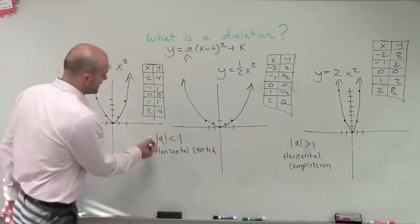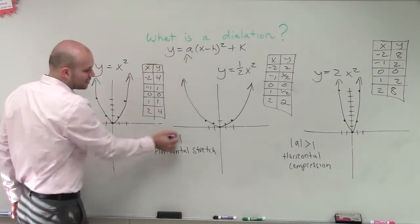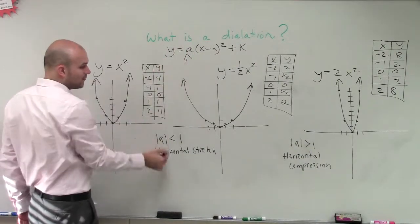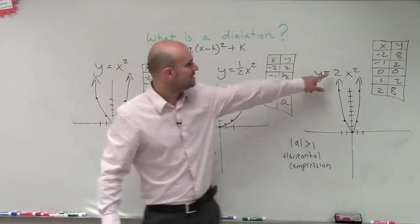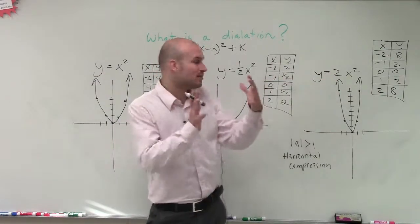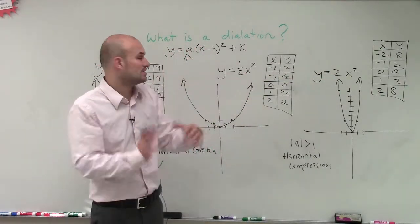So all really dilation is just looking at is how is our graph being affected, either by a compression or by a stretch. And our simple rule is just taking our a value and looking at the absolute value, if it's less than 1, then we're going to be stretching the graph. If it's greater than 1, which you can see, 2 is greater than 1, so we compressed it. 1 half is obviously less than 1, so we stretch it.